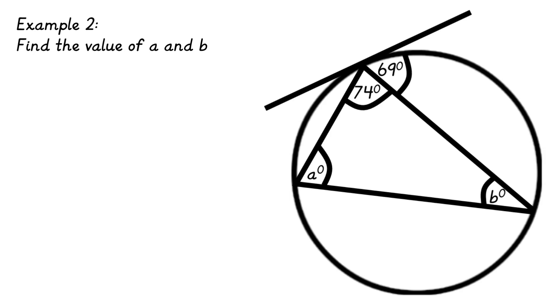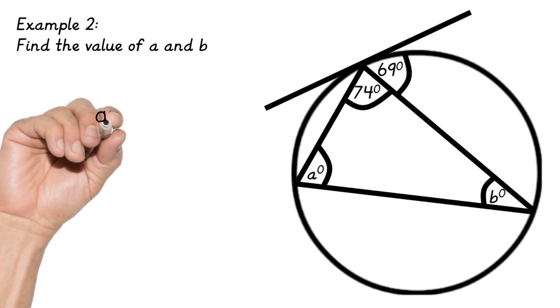Find the value of A and B. Again, if you look at 69, opposite that inside the triangle we have B, but it's actually the other side we look at. So A is 69.